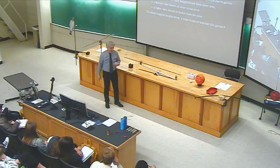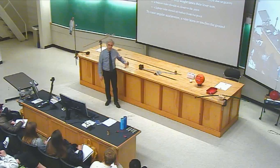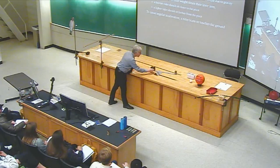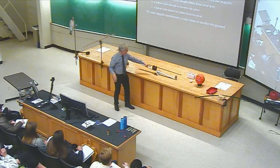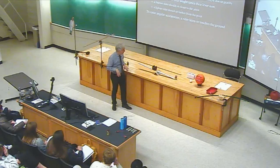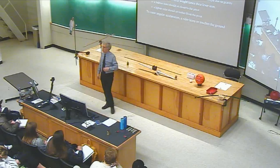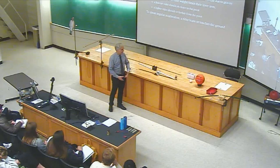If you put on a much heavier kid — say, a parent — they'd produce a giant torque at the same seat distance. But if the parent moves forward with a much shorter lever arm, the product of force times lever arm becomes small enough to match the child's torque at a greater distance. This concept of two torques canceling shows up in all kinds of lever situations.